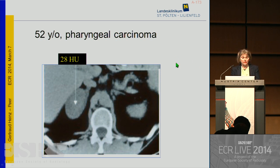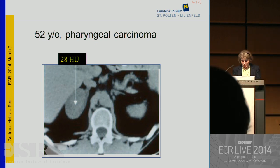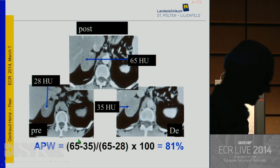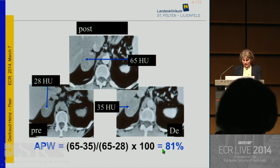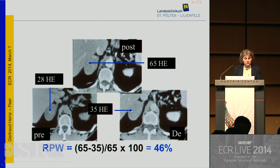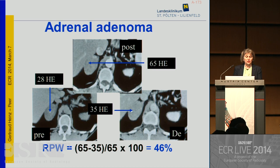For example, a patient diagnosed with pharyngeal carcinoma presented with a large right adrenal lesion at 28 Hounsfield units on unenhanced CT — clearly not indicating a benign lesion. We performed contrast-enhanced dynamic studies and calculated the absolute washout, which proved to be 81%, clearly above 60%, indicating a benign lesion. The relative percentage washout was 46%, clearly above 40%, again indicating a benign lesion — this proved to be an adrenal adenoma.